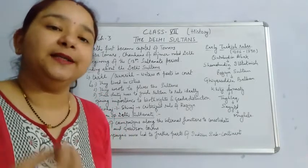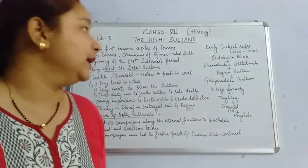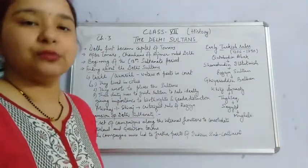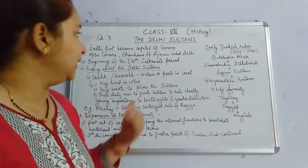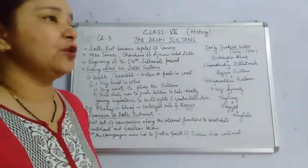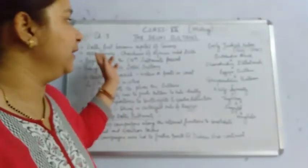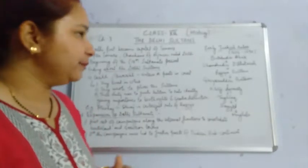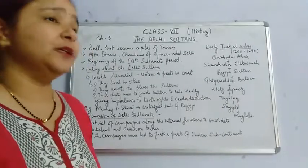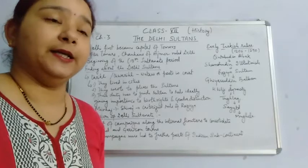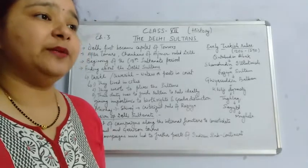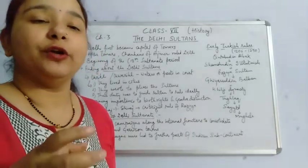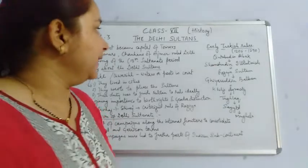Especially from the 12th century onward, Delhi started becoming an important center of many rulers and their empires. Delhi first became the capital of the Tomar rulers, who occupied the Delhi region. Later, after the Tomars, it was the Chahamana rulers, or the Chauhans of Ajmer, who occupied Delhi and included it in their kingdom. It was in the beginning of the 13th century that the Sultanate period started, which we relate with the coming of the Muslim dynasties in India, who occupied especially the northern region.